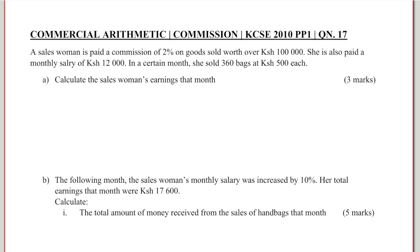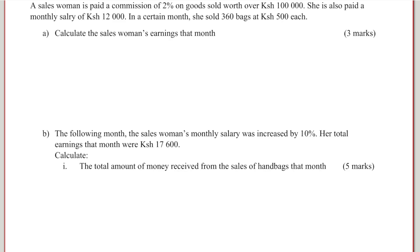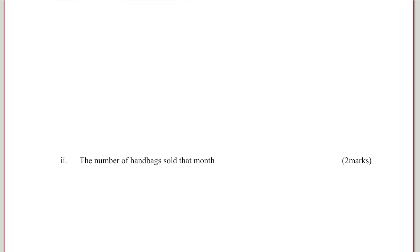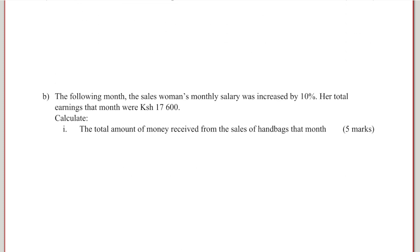Then part B: the following month, the saleswoman's monthly salary was increased by 10%. Her total earnings that month were $17,600. Calculate: one, the total amount of money received from the sales of handbags that month; and part B, the number of handbags sold that month.